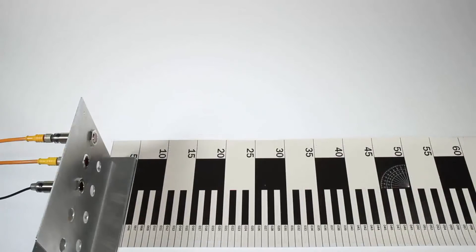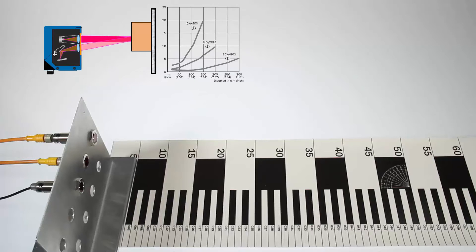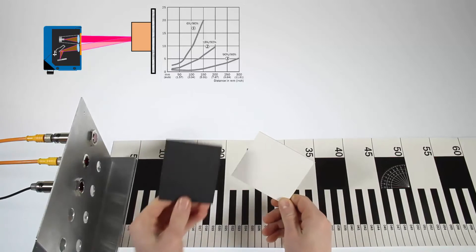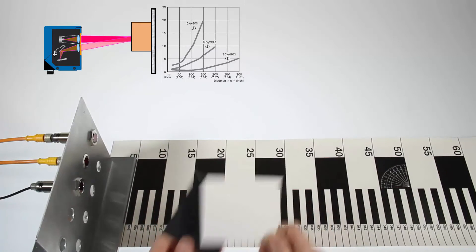One fundamental specification criteria for a background suppression version is the so-called black-white shift, which basically gives an indication of how large the difference between a bright and a dark colored object is. This is, in applications,